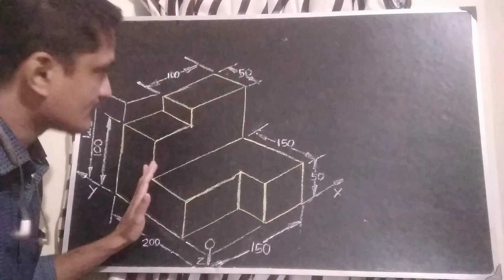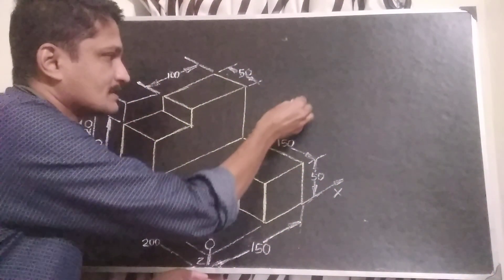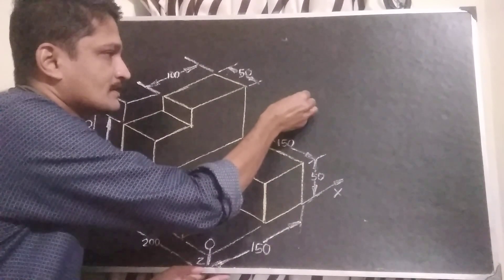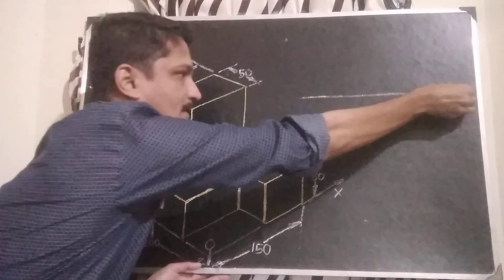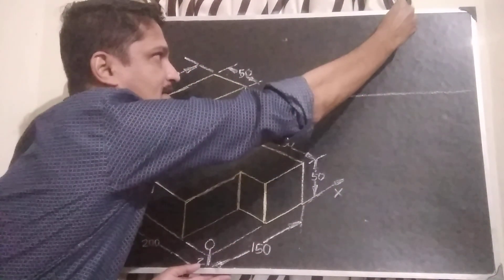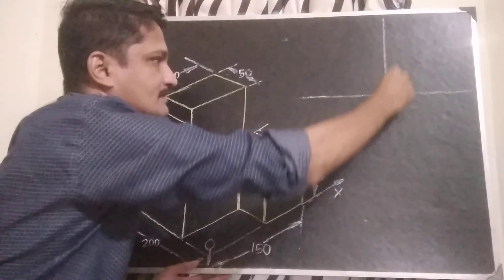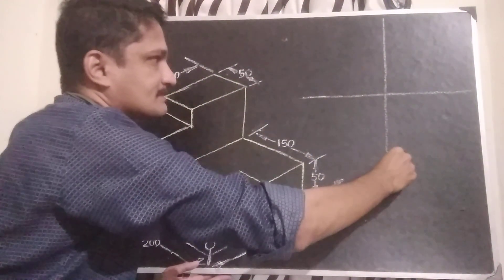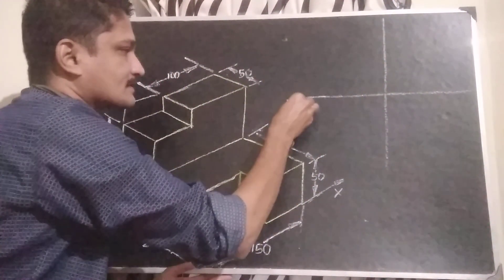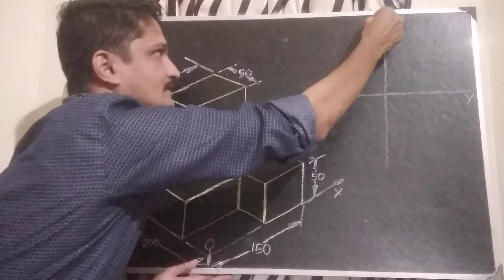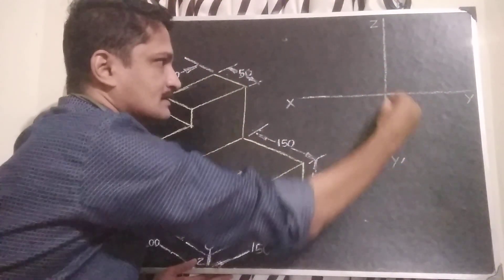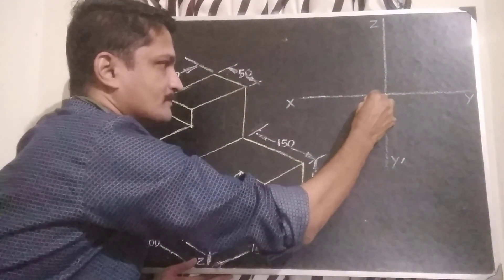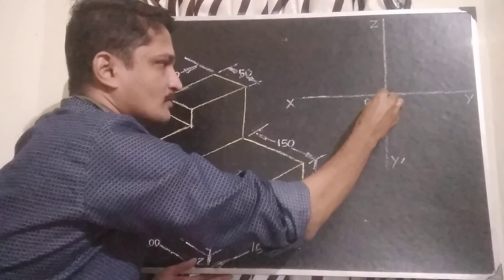First, we draw the x-y line, then z-y dash. So we have x-y and then z-y dash. This point will become origin — 0, 0 — the origin.